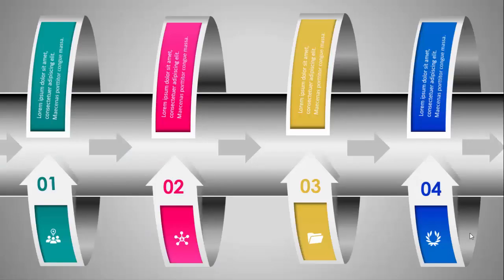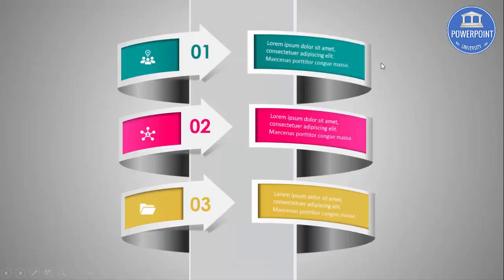Welcome to my YouTube channel PowerPoint University. In this tutorial I'm going to show you four circular arrows infographic slides in PowerPoint. You can see I have created a circular arrow with an option number, an icon, and some text which you can modify. I've created options one, two, three, and four with arrows pointing from left to right. I've also created a vertical slide version.